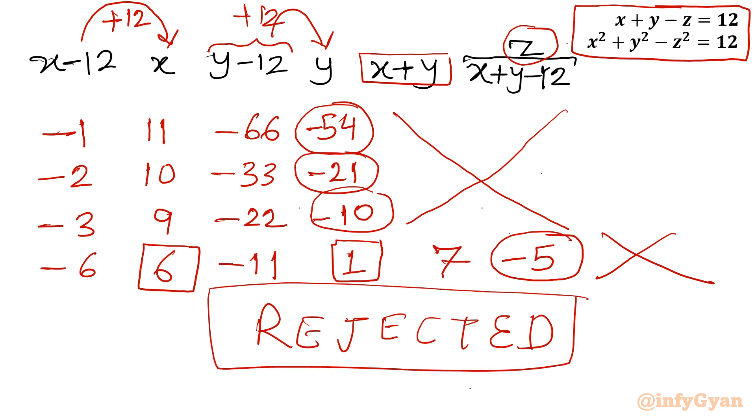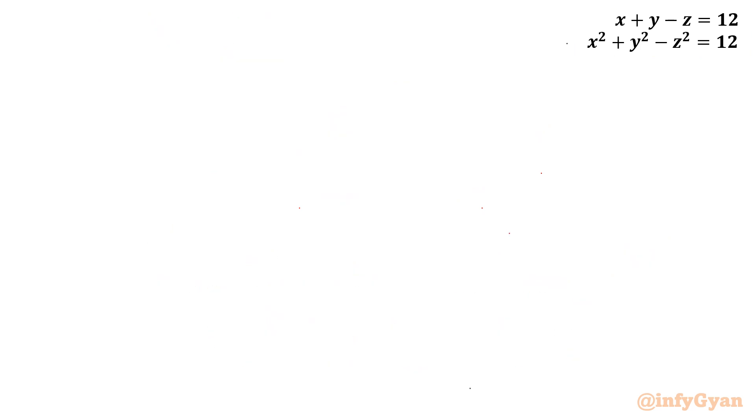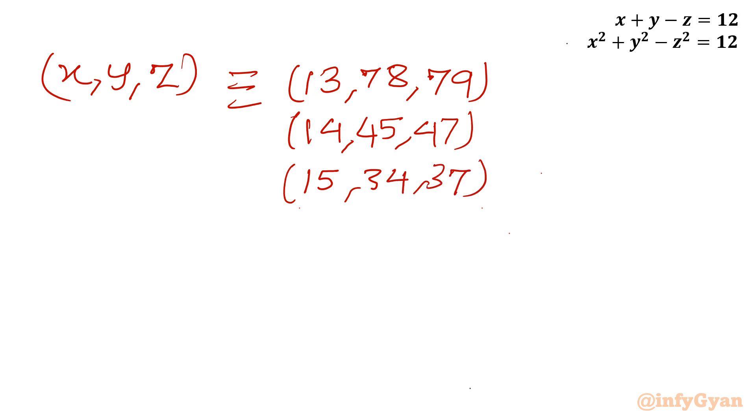Now our answer time. So let us write our answer. How many solutions are there? So 4 solutions were there straight away. Let me write: 13, 78, 79 is the first triplet. Second triplet was 14, 45, 47. Third triplet was 15, 34, 37. And last triplet was 18, 23, and 29.